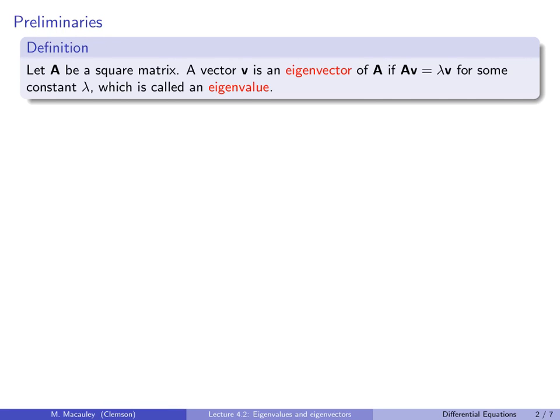Here's a definition. Suppose A is a square matrix — it will be 2×2 for everything we do, but this works for a general n×n matrix. A vector V is an eigenvector of A if A times V equals some Lambda times V for some constant Lambda, which is called an eigenvalue. So eigenvalues and eigenvectors come in pairs.